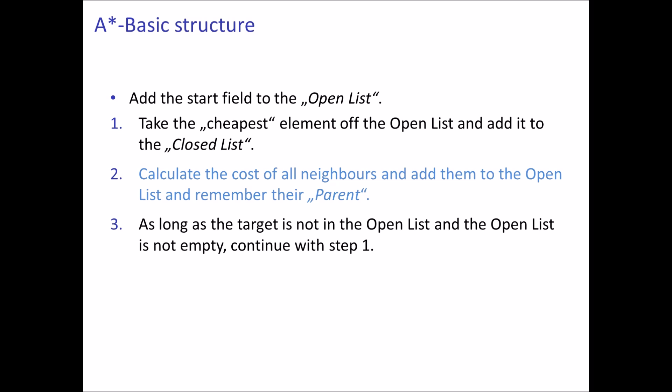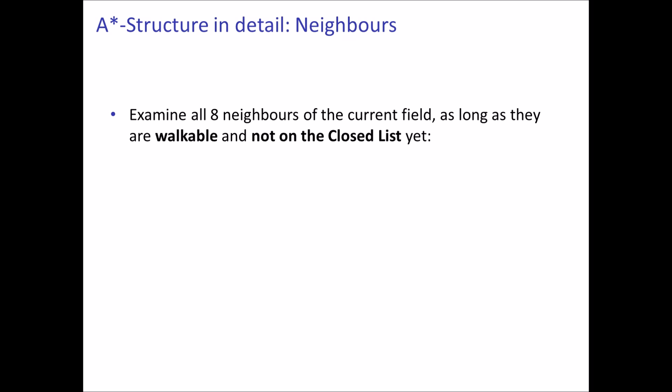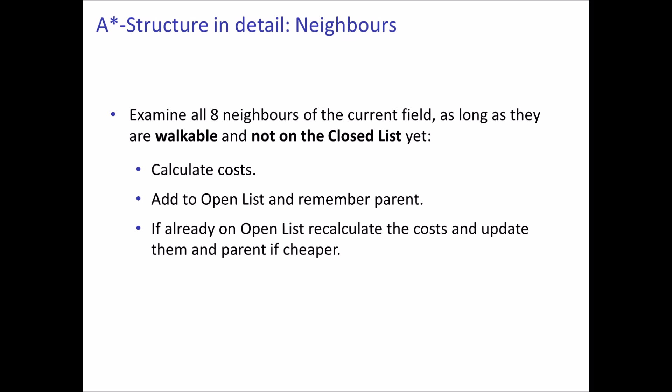After adding a field to the closed list, we calculate the cost of all its neighbors and remember this field as their parent. When examining neighbors, we look through all eight neighbors as long as they are walkable and not on the closed list yet. The closed list prevents us from getting into an endless loop by tracking which fields we don't need to examine anymore. We calculate the costs of the neighbors, add them to the open list, and remember their parent. If they are already on the open list, we recalculate and update costs and parent only if the new values are cheaper.